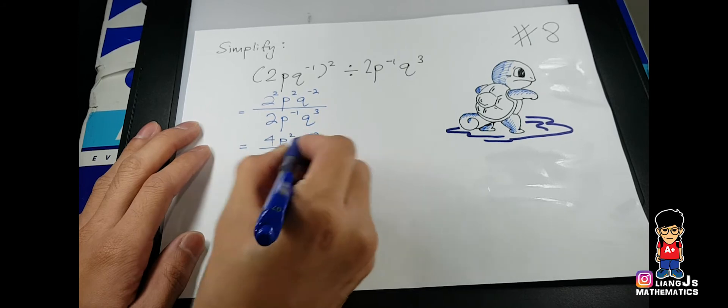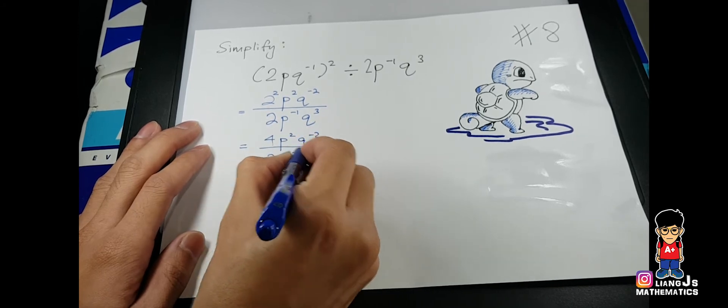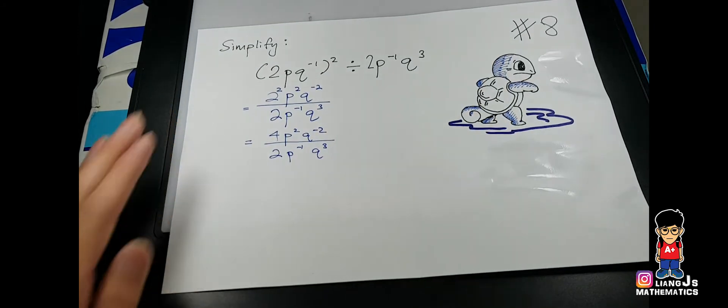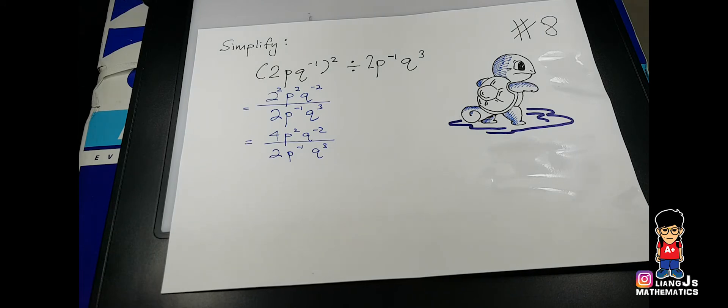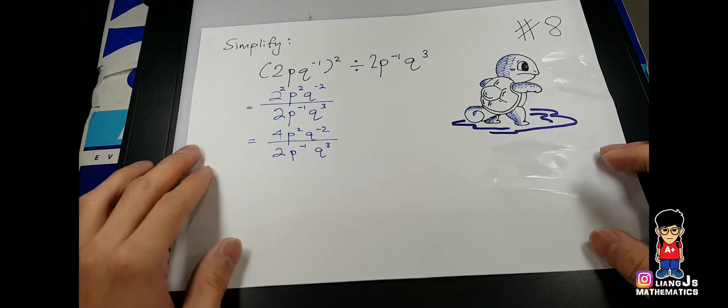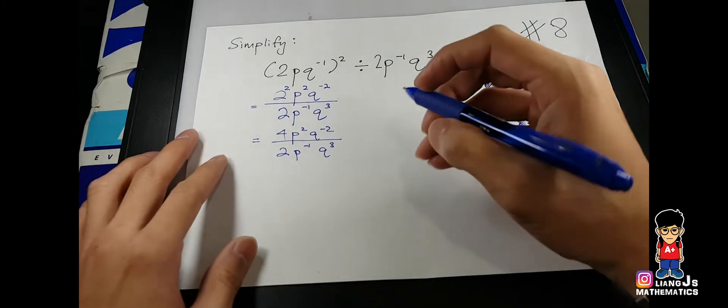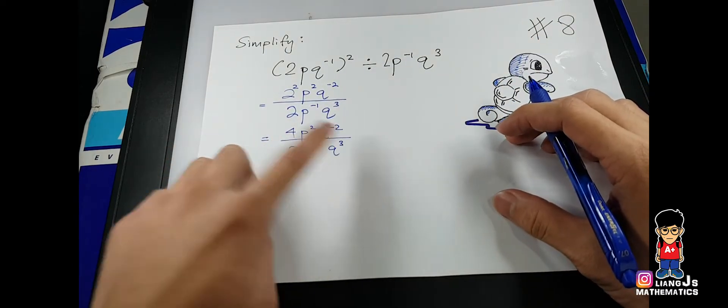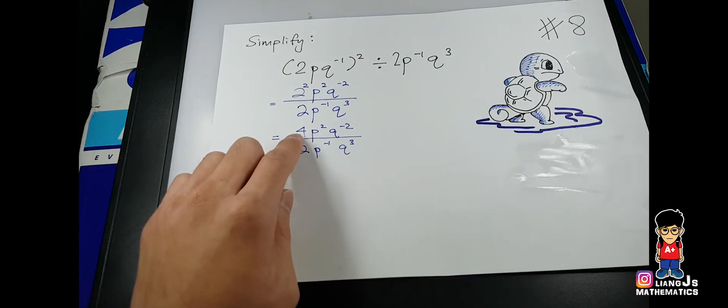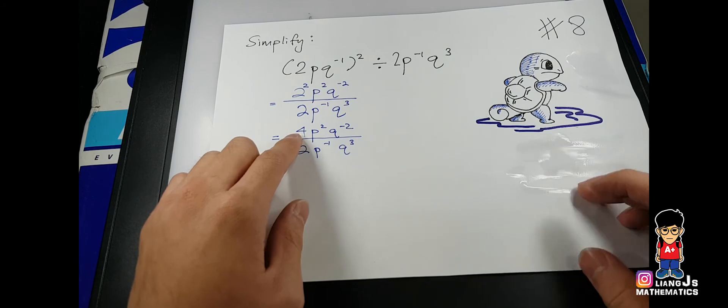I will just make it like this, and then P^2Q^-2, then over 2P^-1 and Q^3. There are a few shortcuts, but I'll treat it as a sort of pattern. Let me show you. I know that everything shows times above.